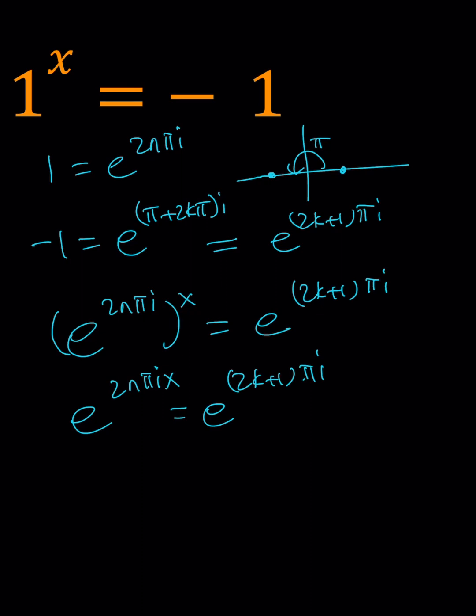Here the pi i cancels out. And then k are integers. So x can basically be written as odd integer over an even integer.